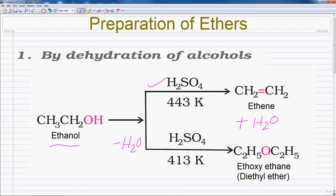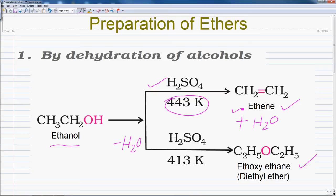The formation of the product — alkene or ether — depends upon the conditions of the reaction. For example, when ethanol is heated with concentrated H2SO4 at 443 Kelvin, ethene is formed as the major product. However, at 413 Kelvin, ethoxyethane is obtained as the major product. So we can say this reaction is very temperature sensitive.